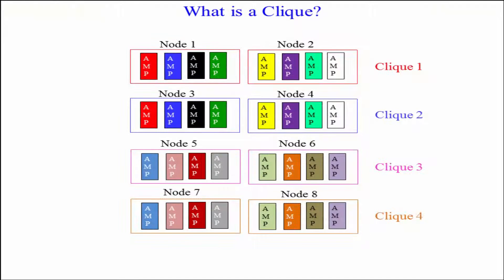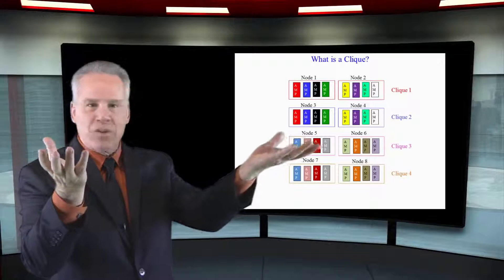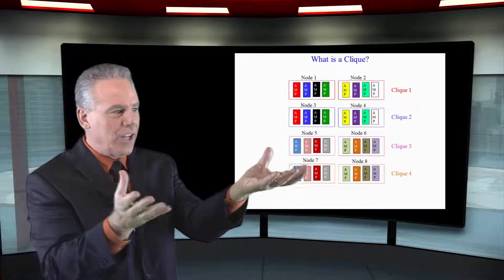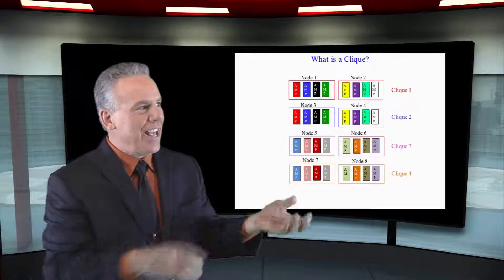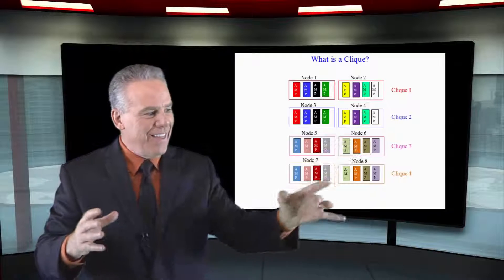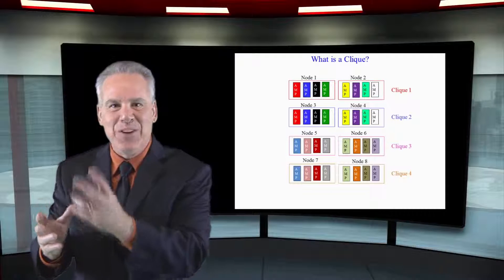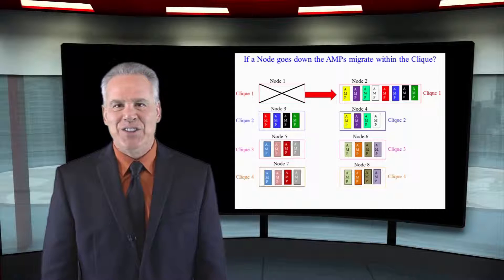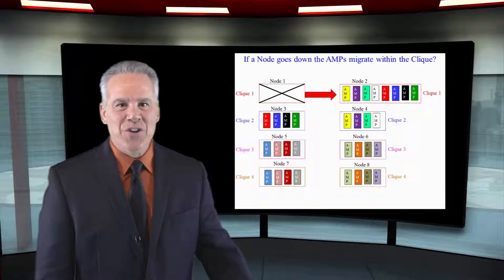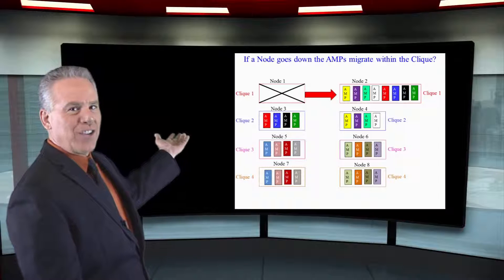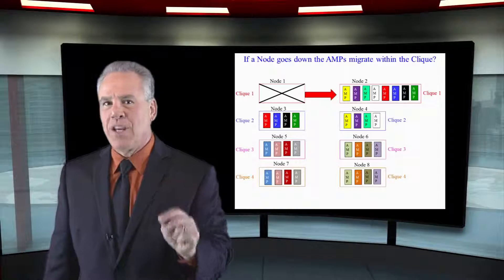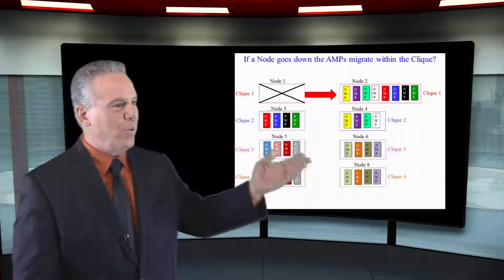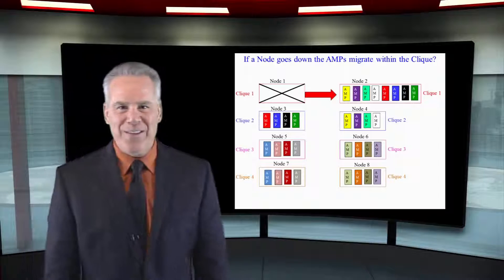It's a little bit like you having your house and your neighbor's house and you just adore one another, so you dig a little tunnel between the houses. If there's any trouble, they and the kids come live with you for the day. Disaster has struck — node number one has crashed, and all of the amps in node number one have migrated to the other node in their clique.